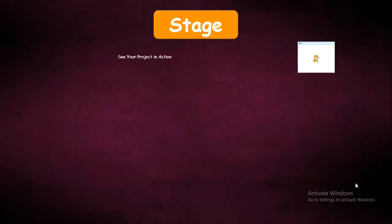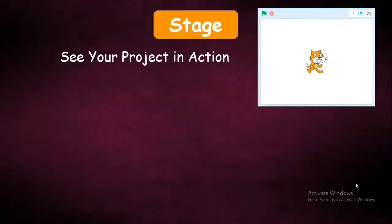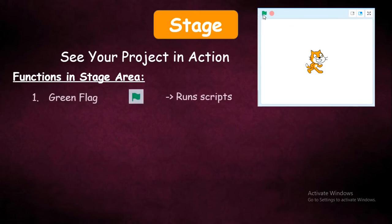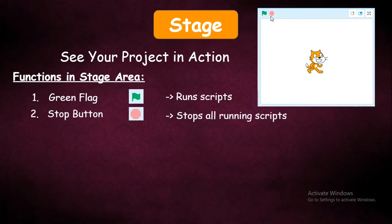Then, what is Stage? Stage is a place where you can see your project in action. What are the functions in the Stage Area? At the top left corner, it has a green flag — the green flag is to run the scripts. Then there is the red button — this stop button will stop all the running scripts.